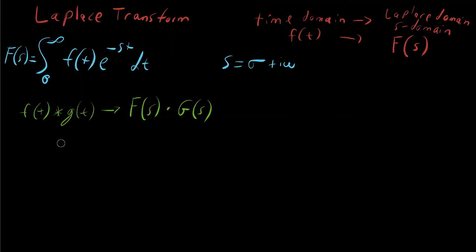Think about that: convolution in the time domain is just multiplication in the Laplace domain. That saves you from a very messy convolution — you just multiply. There are usually tables that give you the Laplace representation of common functions, so once you've converted to the Laplace domain, just multiply and you've convolved your signals. Then you can go back with the inverse Laplace transform to return to the time domain if needed.